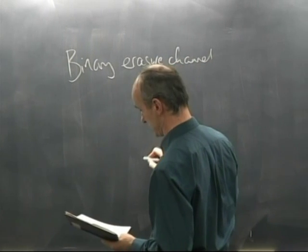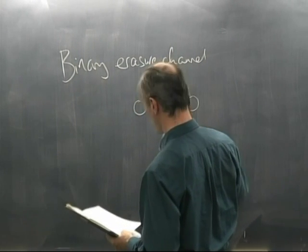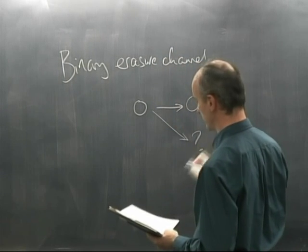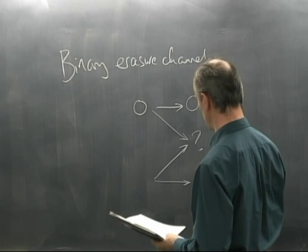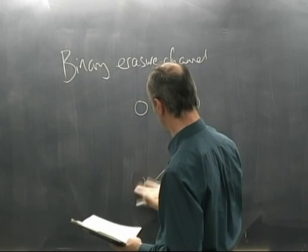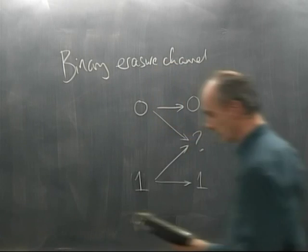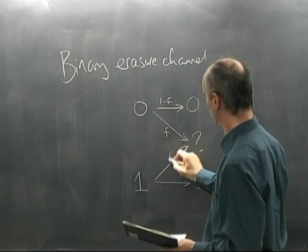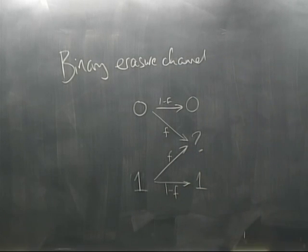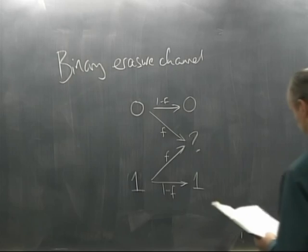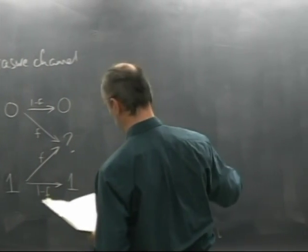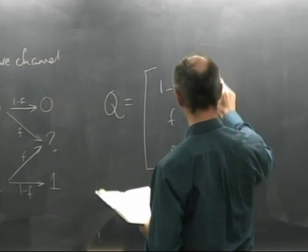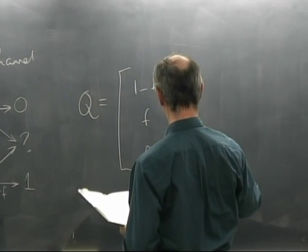Another channel is the binary erasure channel — a great toy model of a phenomenon where sometimes your message doesn't come out correctly at the other end, and the receiver knows this but still doesn't know what you sent. There is a symbol called question mark, which comes out with probability f. The conditional probability matrix is: 1−f, f, 0 in the first column and 0, f, 1−f in the second.